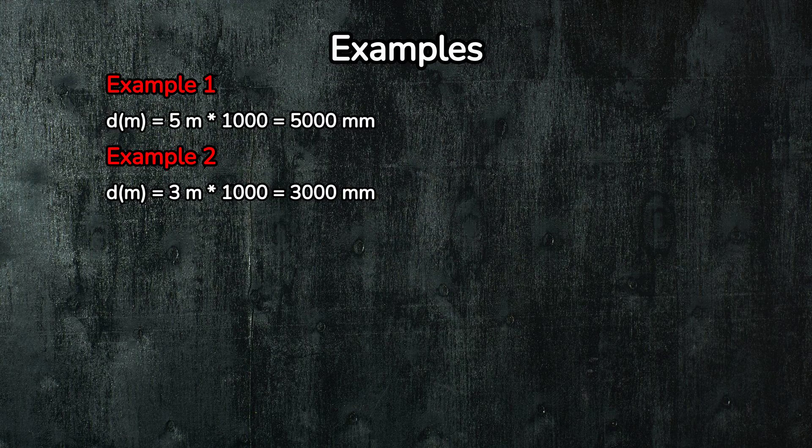Let's see this formula in action with a couple of examples. Example 1: suppose you have 5 meters and you want to convert it to millimeters. All you need to do is multiply by 1,000. So 5 meters equals 5,000 millimeters.